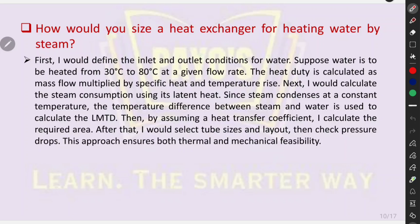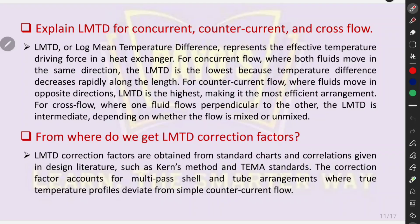Explain LMTD for concurrent, counter-current, and cross flow. Log mean temperature difference (LMTD) represents the effective temperature driving force in a heat exchanger. For co-current flow, where both fluids move in the same direction, the LMTD is lowest, because the temperature difference decreases rapidly along the length. For counter-current flow, where fluids move in opposite directions, LMTD is highest, making it the most efficient arrangement. For cross flow, where one fluid flows perpendicular to the other, the LMTD is intermediate, depending on whether the flow is mixed or unmixed.